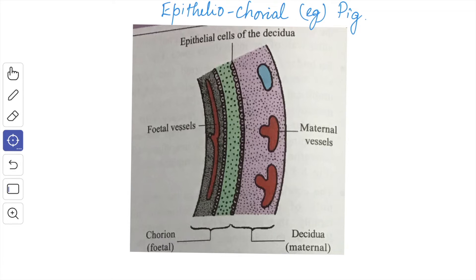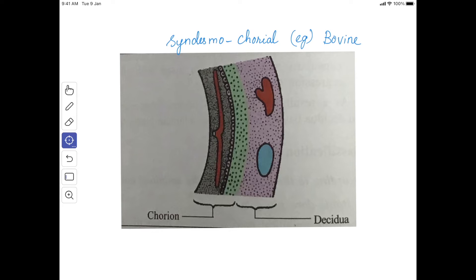Hence, this type of placenta is called as non-deciduate. The next type is syndesmochorial which is found in bovines. The endometrial epithelium disappears and the chorion is separated from the maternal blood only by the endometrial stroma and the endothelium of the maternal capillaries.